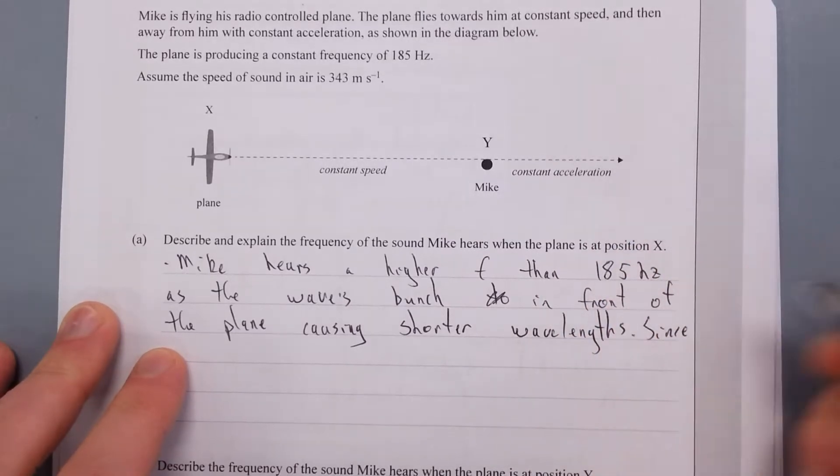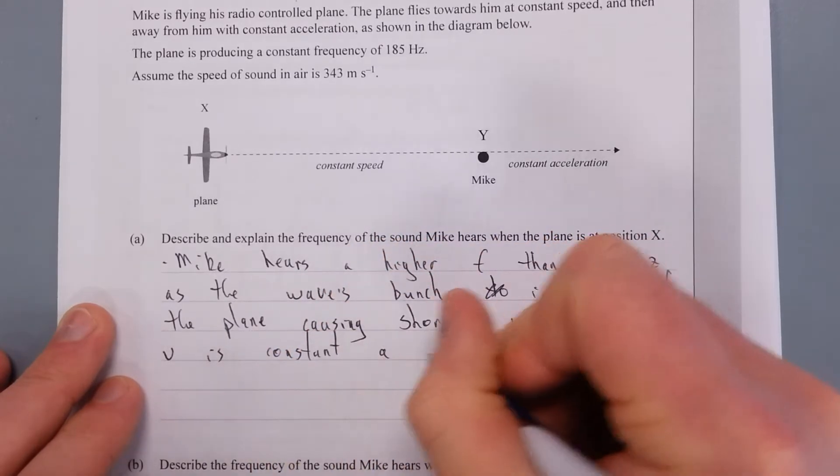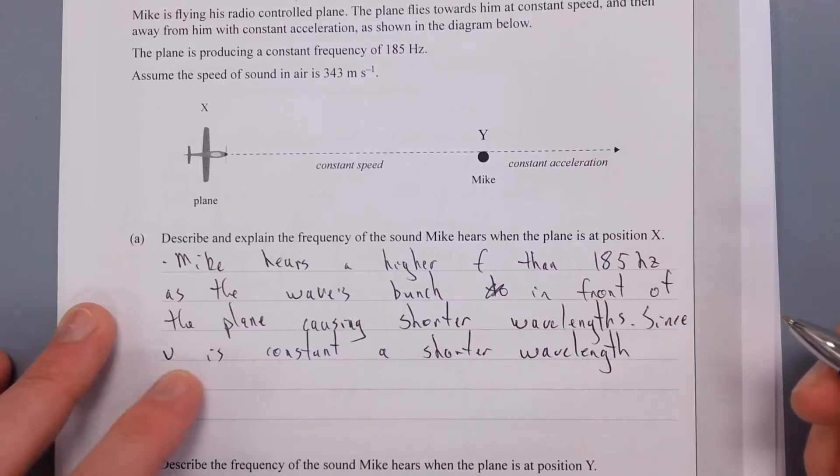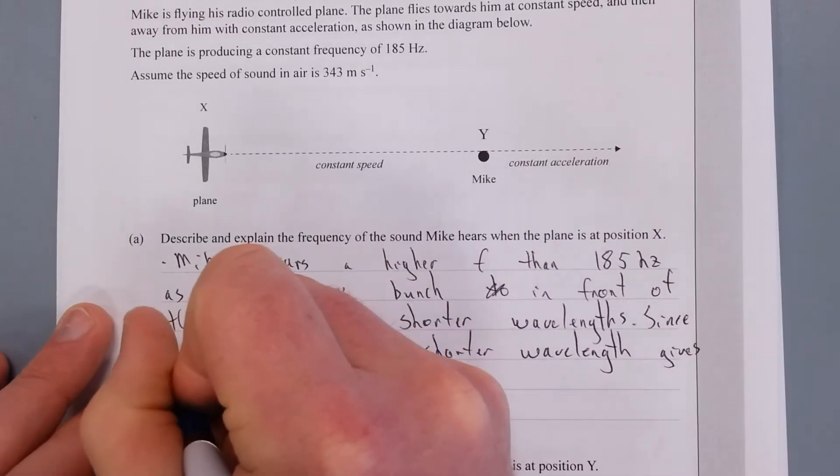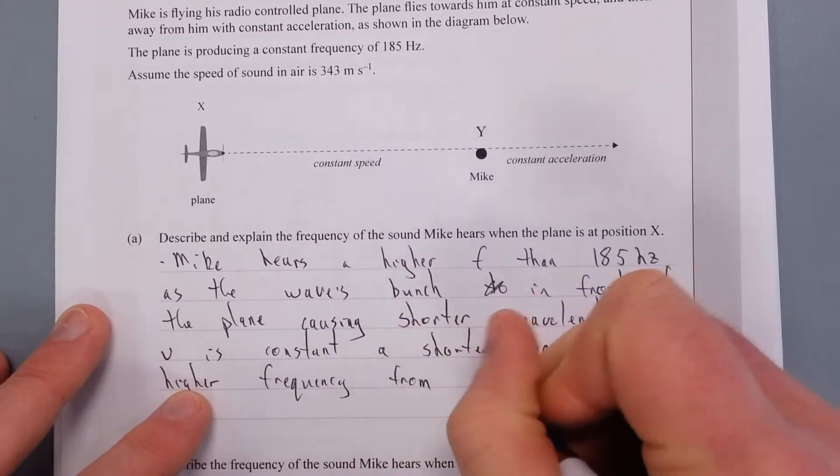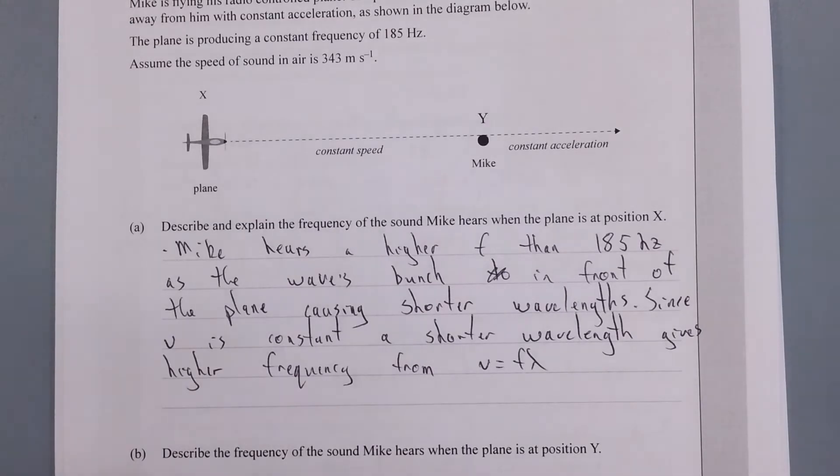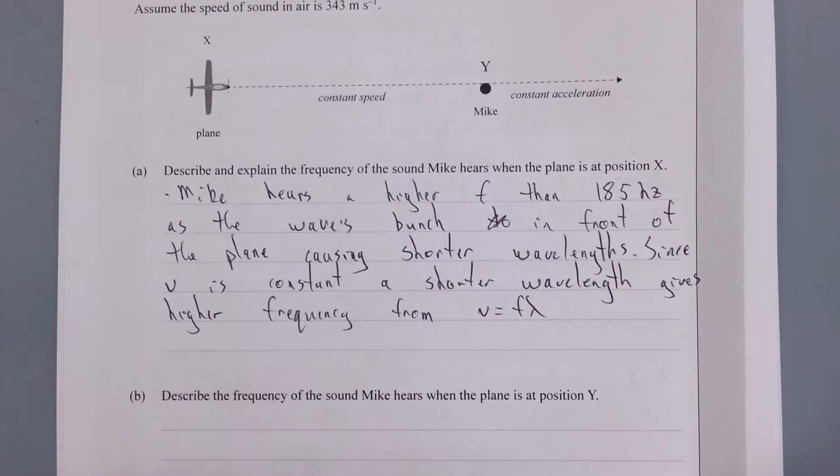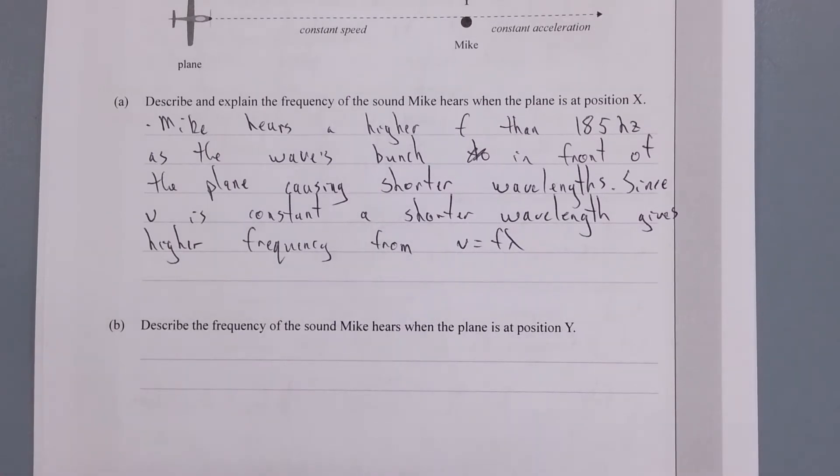Since the velocity V is constant, shorter wavelength gives higher frequency. V equals F lambda. And you've heard this phenomenon before. As soon as the ambulance comes towards you, sounds higher pitch. Or cars that come towards you, sounds higher pitch because the wave fronts bunched together. The velocity is always constant whatever your medium, unless your medium changes. That's the only way for your velocity to change.